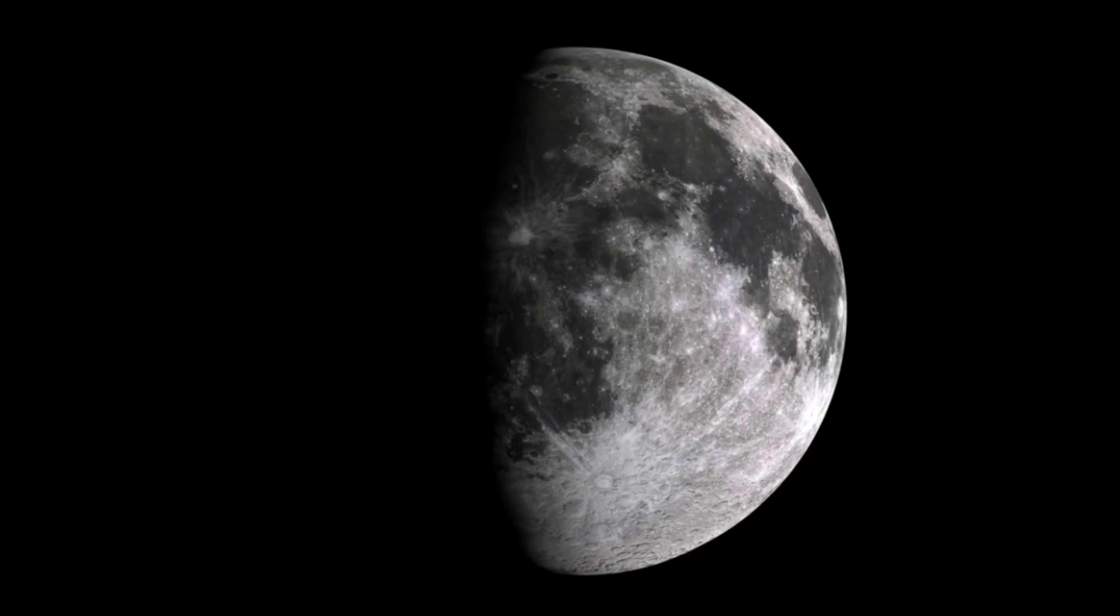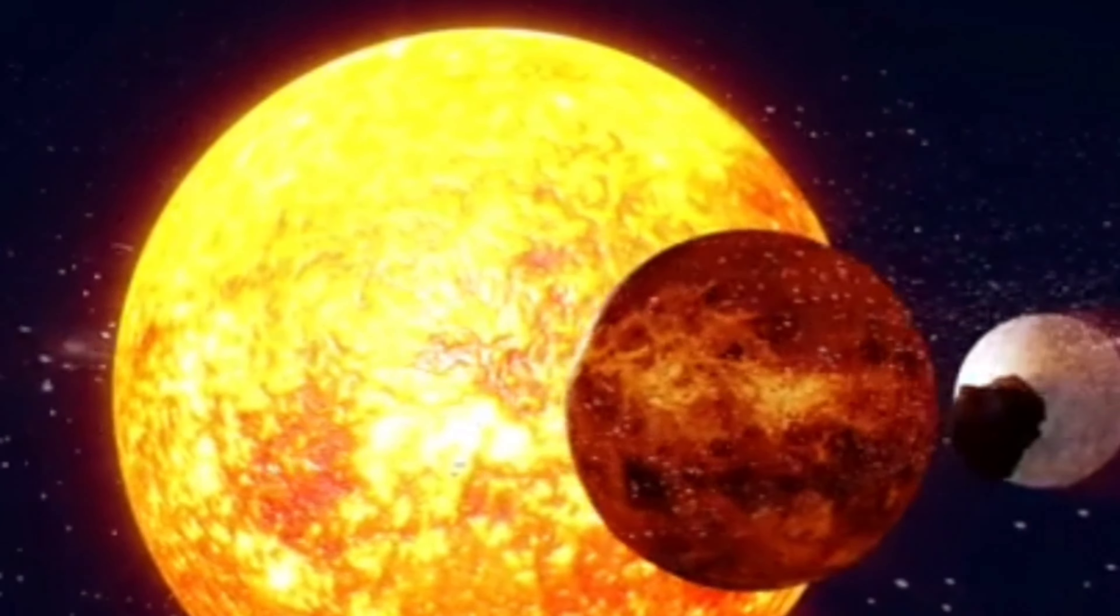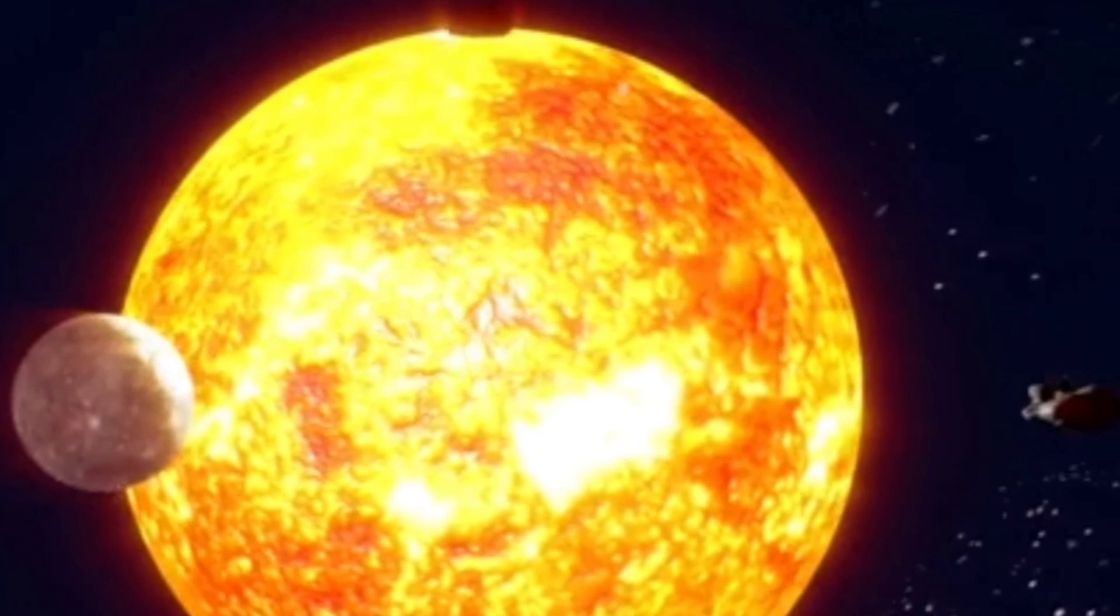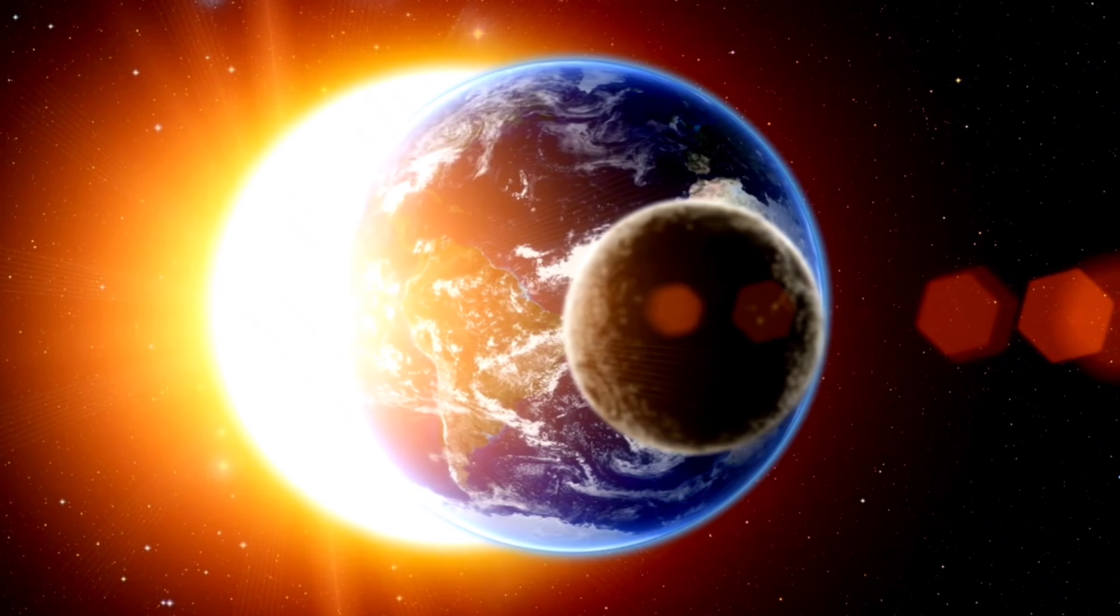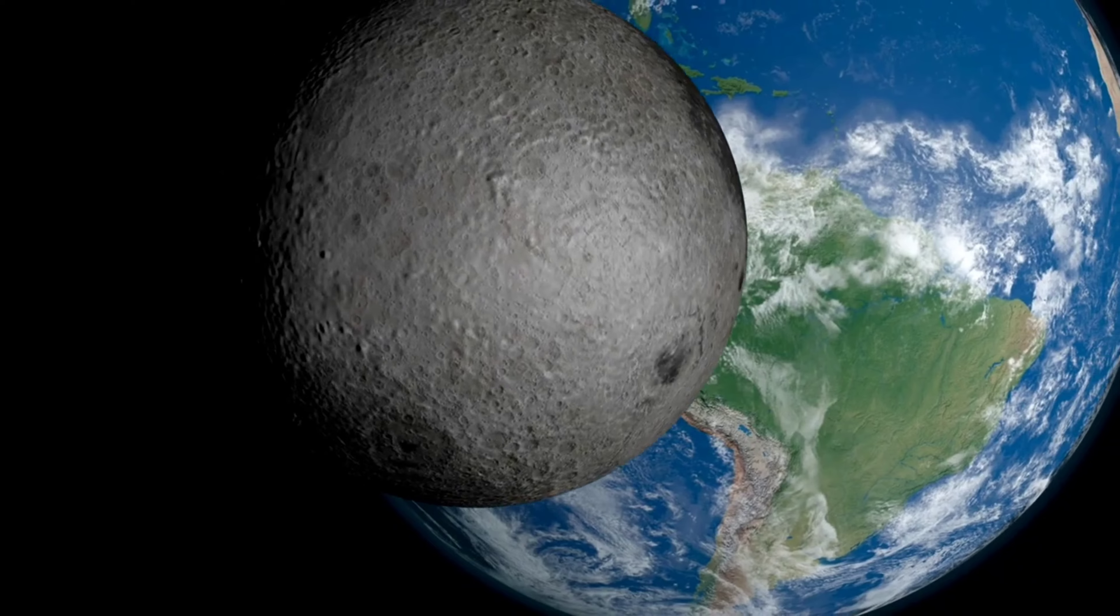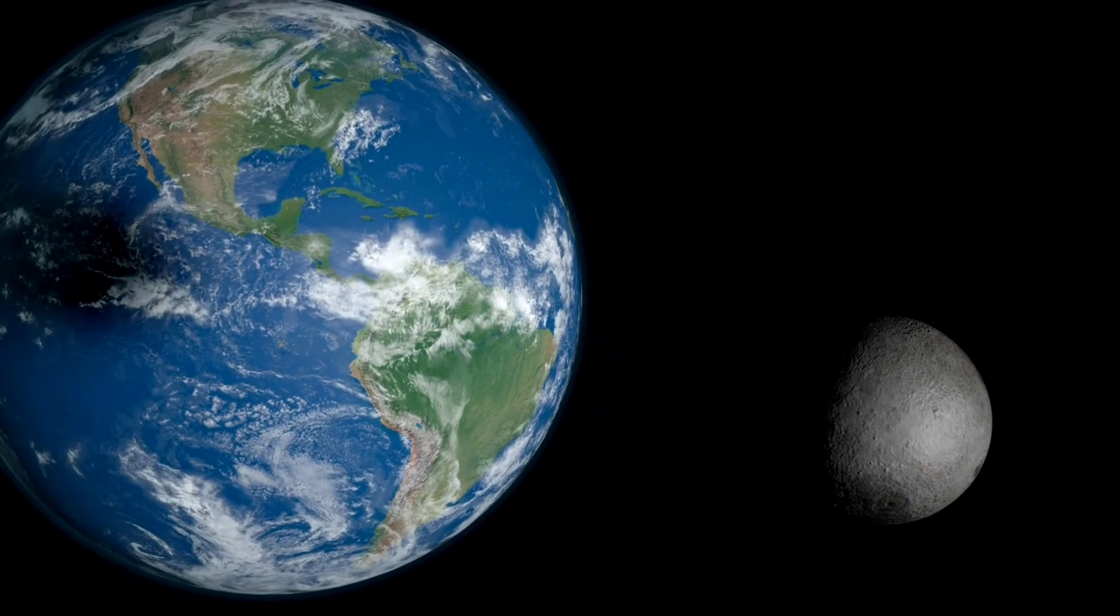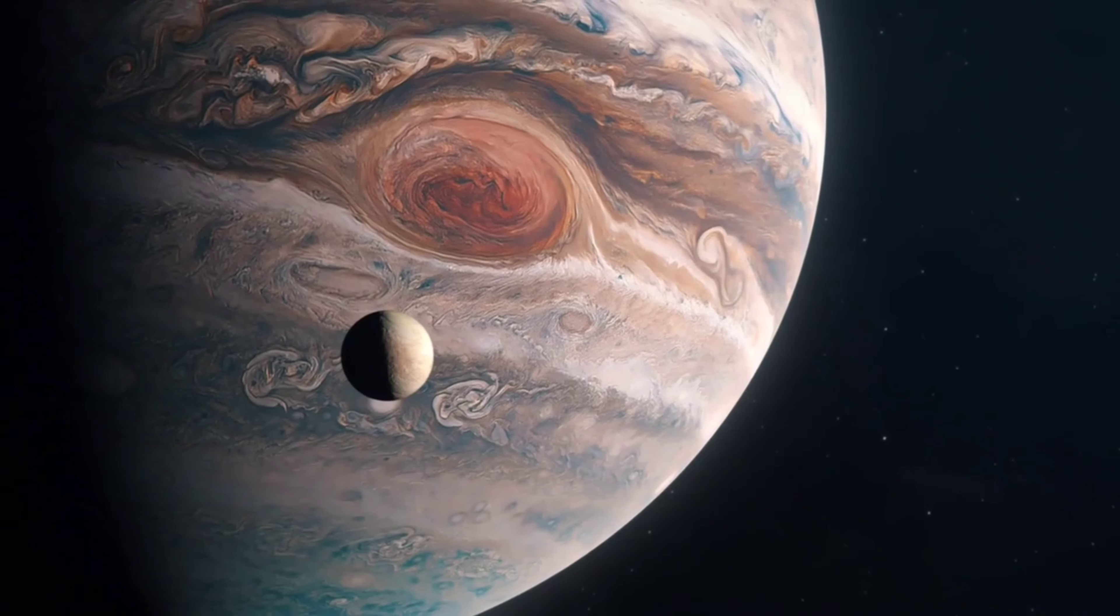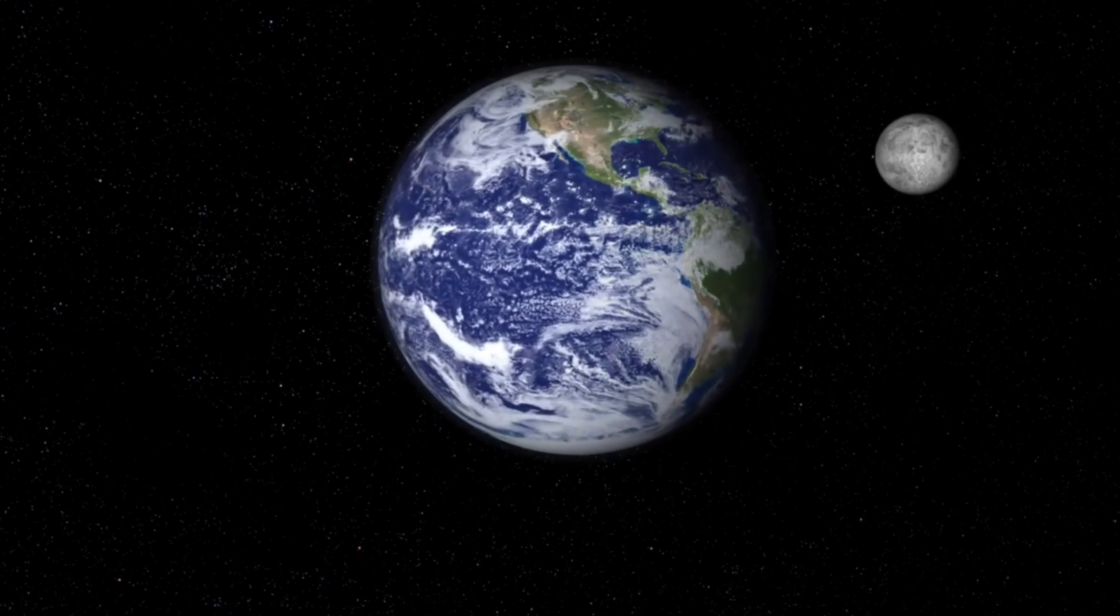Number 5: Our Moon. Closer to home in our own solar system, there are mysteries about our moon compared to other moons in the solar system. First of all is its unusually large size relative to the planet it orbits. The moon is about one-quarter the size of Earth, whereas most other moons in the solar system are only a few percent the size of their host planets. This size difference has led some scientists to question how the moon formed in the first place.